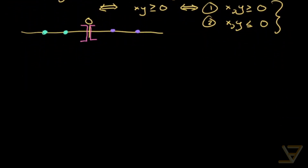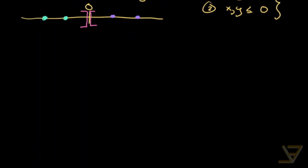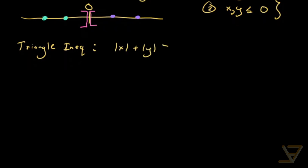So that proves the reverse triangle inequality in the first way. Now I'll show you a second way of deriving it that uses the triangle inequality. Remember, the regular triangle inequality says that the absolute value of x plus the absolute value of y is greater than or equal to the absolute value of x plus y. And we want to prove the reverse inequality.